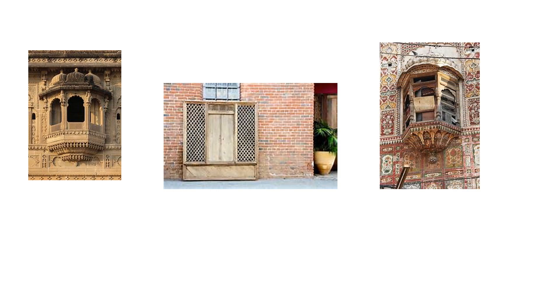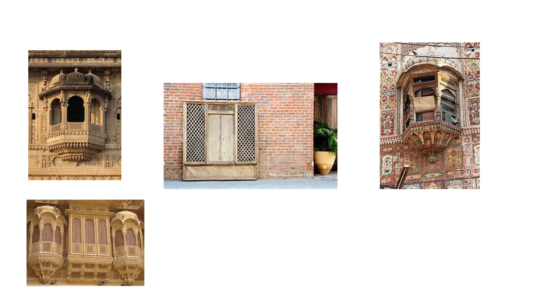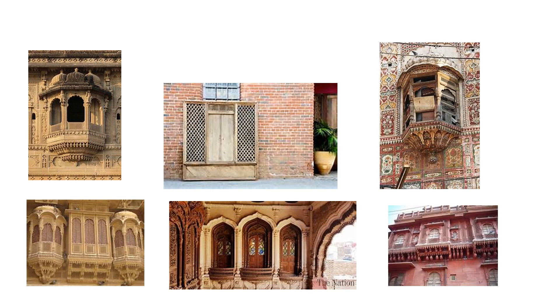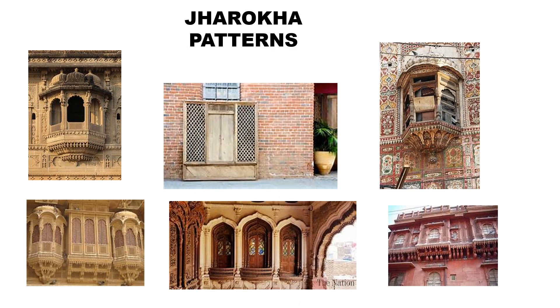Now have a look at these pictures. These are called Jharokas. We can see patterns here too. A Jharoka is a type of stone window projecting from the wall face of a building. It is usually a projected balcony to peep outside without being noticed.